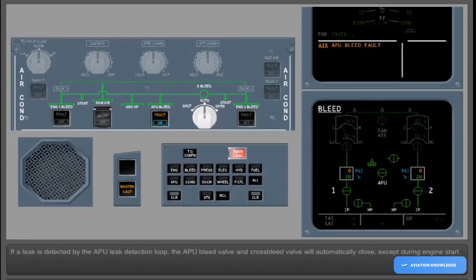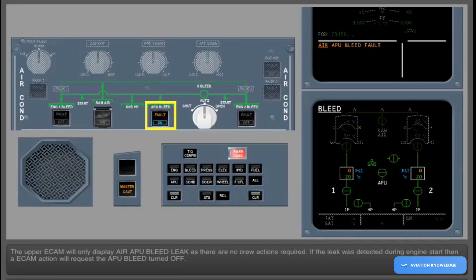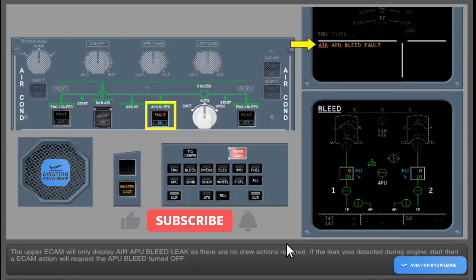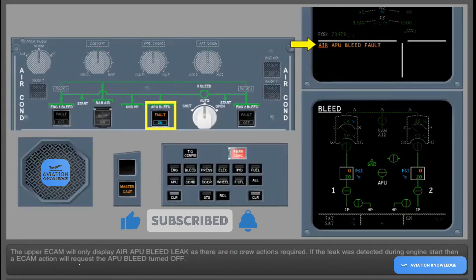If a leak is detected by the APU leak detection loop, the APU bleed valve and cross bleed valve will automatically close, except during engine start. The upper ECAM will only display air APU bleed leak, as there are no crew actions required. If the leak was detected during engine start, then an ECAM action will request the APU bleed turned off.